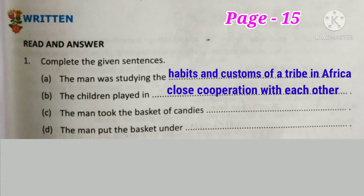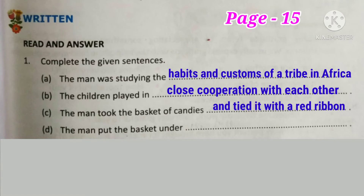The third blank — the man took the basket of candies and tied it with a red ribbon. The last blank — the man put the basket under the tree. Those are the only two exercises for this chapter. Now we will do difficult words, word meanings, sentences, question answers, and reference to context.